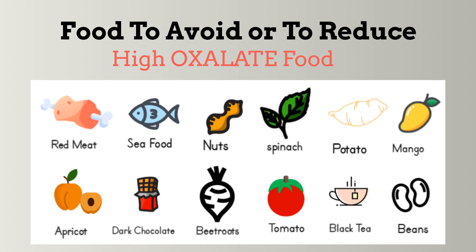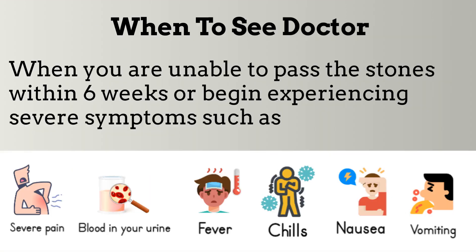You are more likely to develop high oxalate kidney stones if you have elevated oxalate levels. When you are unable to pass the stones within six weeks, or begin experiencing symptoms such as severe abdominal pain, blood in your urine, high fever, chills, nausea, or vomiting, it is very important to see a doctor for further examination.